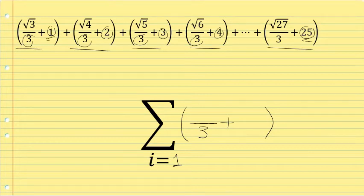Added to the fraction is a value that begins at 1 and goes the whole way up to 25. Our index, our value of i, is starting at 1. We'll make that second term i.